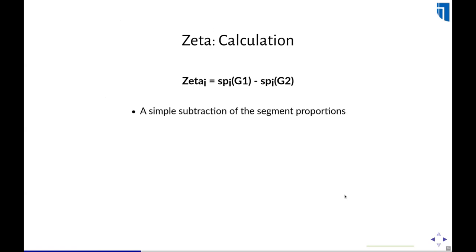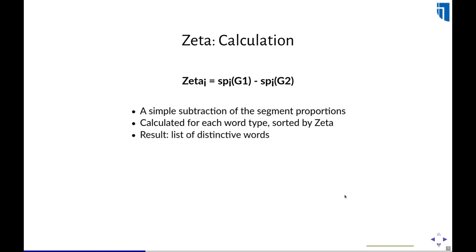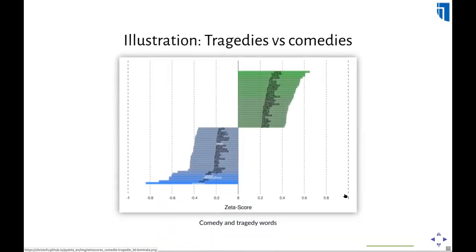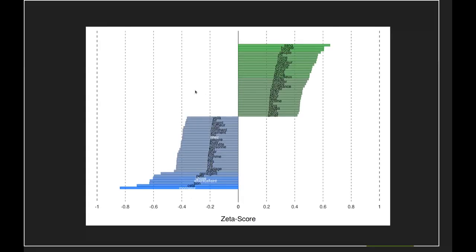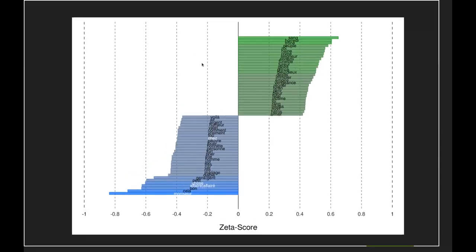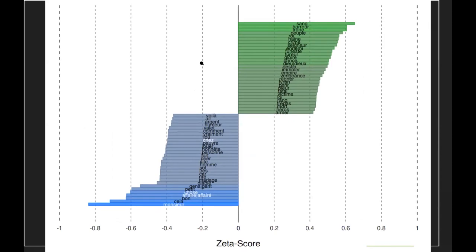You sort your features by Zeta score, and at the extremes you have the positive marker words and the negative marker words — words typical for one group and words typical for the other. Looking at an example — comedies compared to tragedies — the tragedies are on one side with words like blood, horror, throne, people, king, hate, crime. These are highly interpretable content words that we can immediately associate with tragedies.